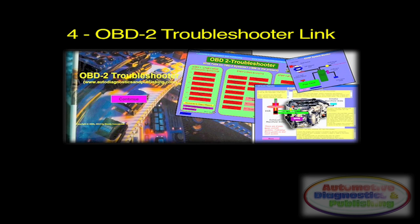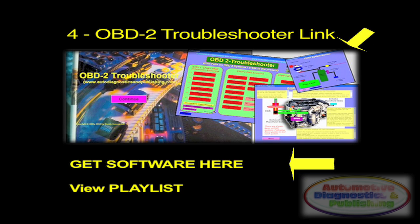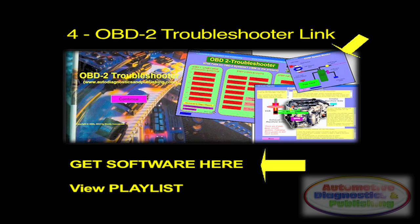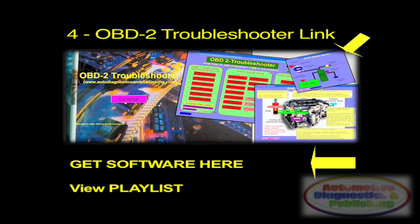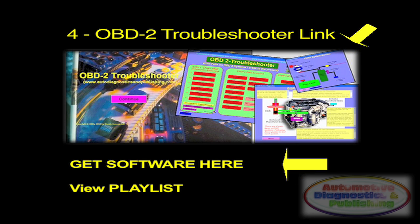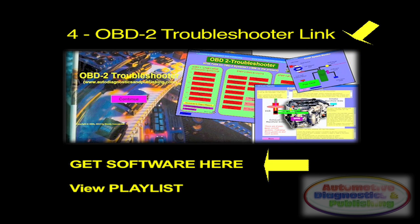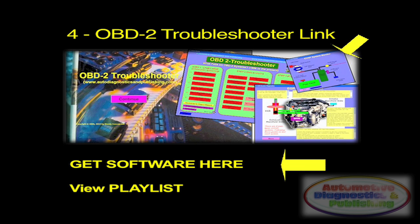The OBD2 Troubleshooter Auto Repair Software is a guided three-step process to diagnosing all OBD2 auto repair needs. Excellent for any repair shop, shop emission, or IM program. It guides you in even resetting the OBD2 monitors — a perfect combination for OBD2 and your repair shop.